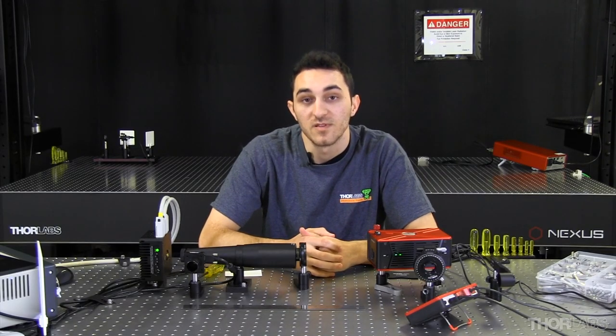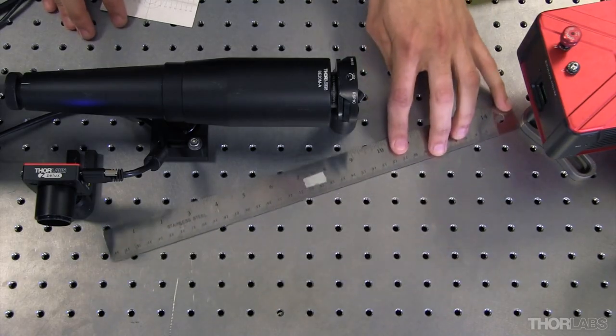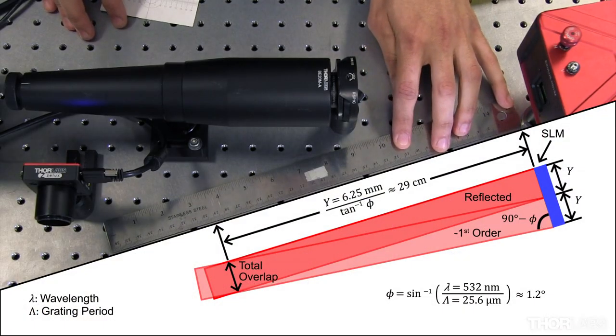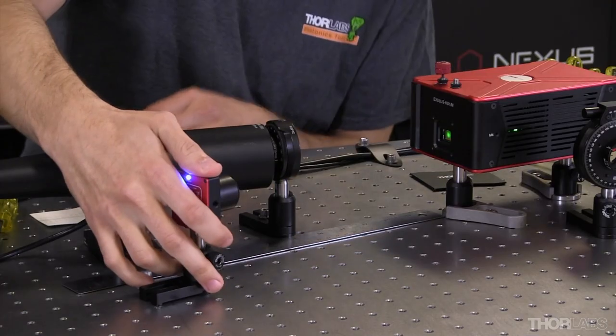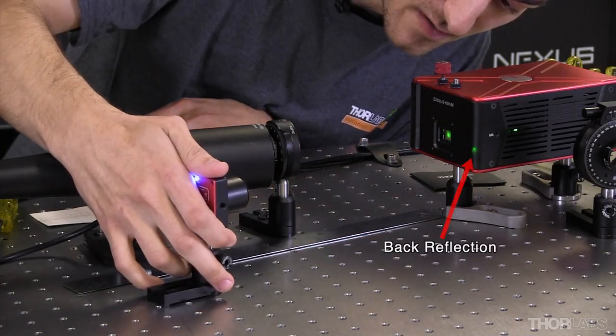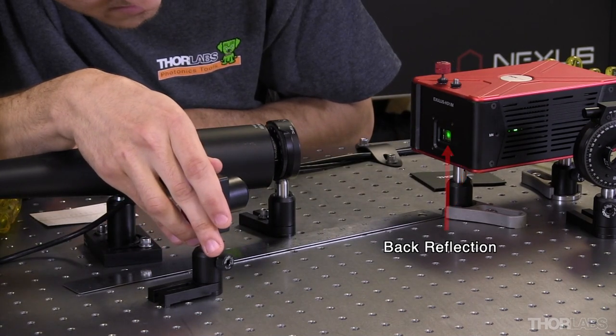Next, I'm going to place my camera in the reflected beam path. I've estimated the camera should be placed about 29 centimeters from the SLM's display. I'm going to place the camera so that the reflected beam is centered on its aperture, and I will angle it so that its back reflection is centered on the SLM.